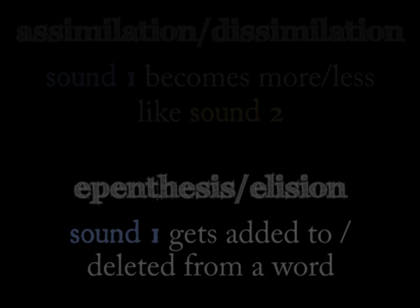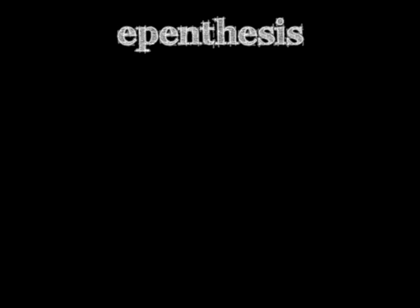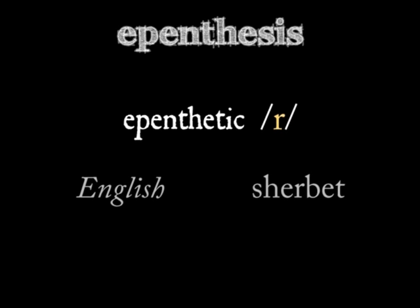When a sound is added to a word, that's called epenthesis. The new phoneme is an epenthetic sound. For instance, you may have heard some English speakers add an epenthetic R to the word 'sherbet,' pronouncing it 'sherbert.'